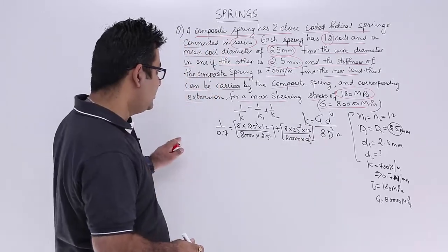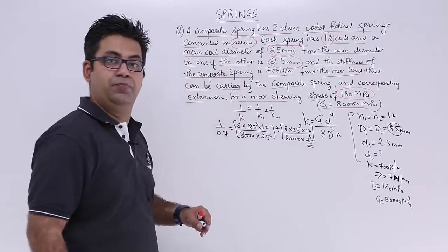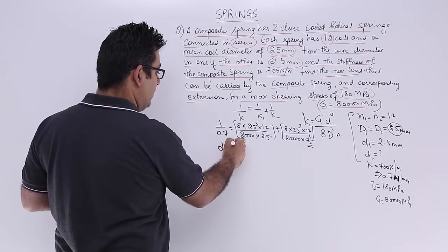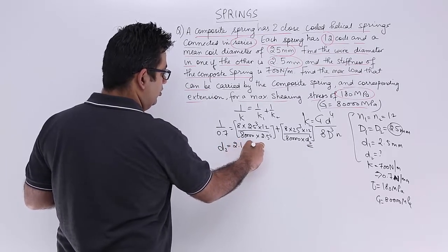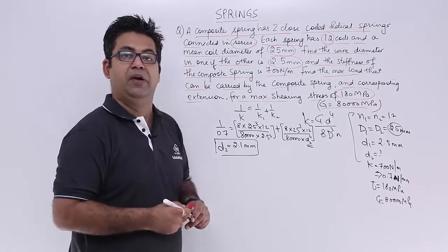So from this equation I can very easily find out D2. It will be a matter of just simple calculation. So D2 will be equal to 2.1 millimeters.